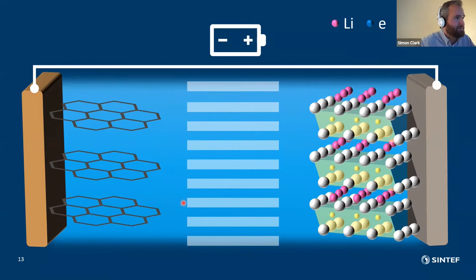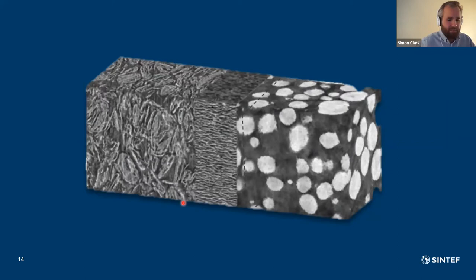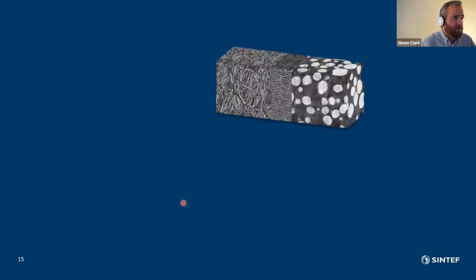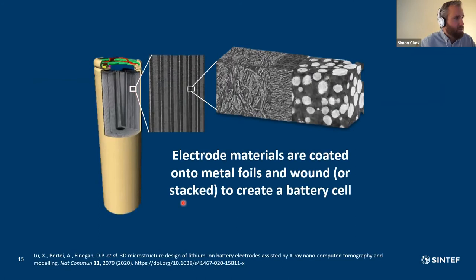So that's the schematic. In practice it looks something like this where we have our negative electrode separator and positive electrode. Those materials can be coated onto foil current collectors and wound or stacked to create a battery cell. So if we were to go into our Tesla and crack open the pack we would find a cell that looks like this and if we cut into it we would find layers and layers of these materials all wound up together in a spiral.